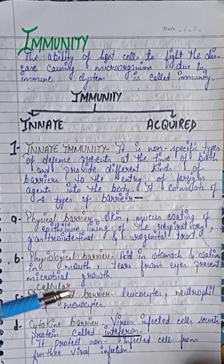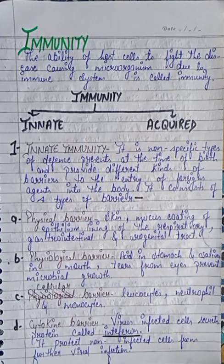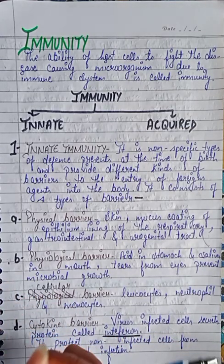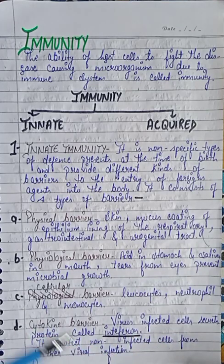The first is the physical barrier — skin on our body, and mucus coating of the epithelium lining the respiratory, gastro-intestinal and urogenital tract. Second is the physiological barrier — acid in the stomach, saliva in the mouth, and tears from the eyes prevent microbial growth.